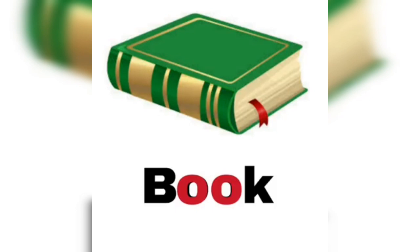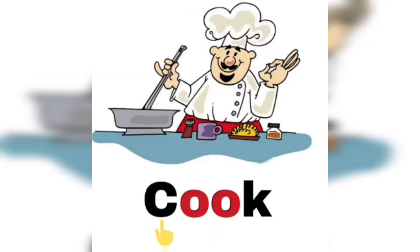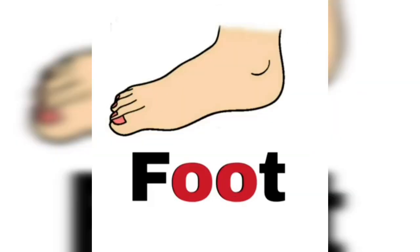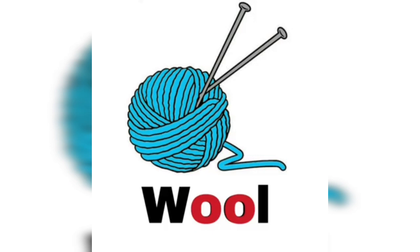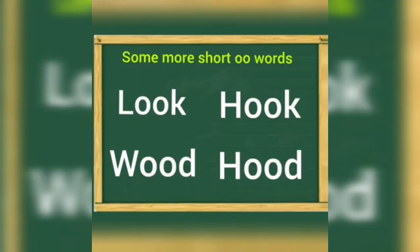Now let's read some OO sound words. B-OO-K: Book. C-OO-K: Cook. F-OO-T: Foot. W-OO-L: Wool. Let's read some more short OO words.